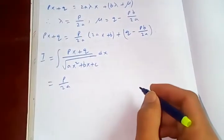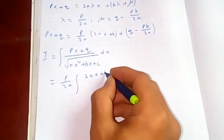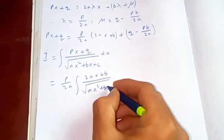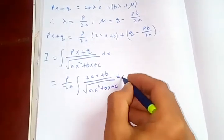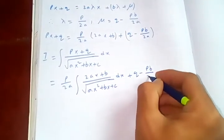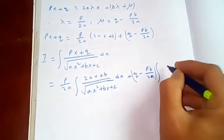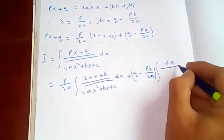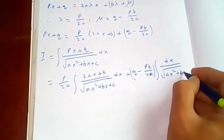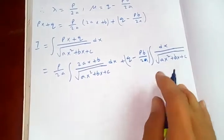p by 2a is constant, coming out. And you have 2ax plus b upon square root of ax square plus bx plus c dx, plus q minus pb upon 2a into integration of dx upon square root of ax square plus bx plus c.